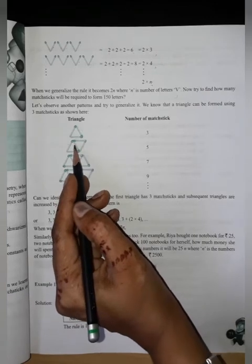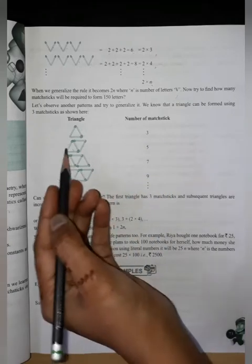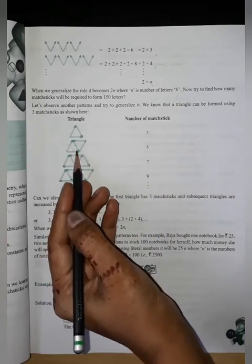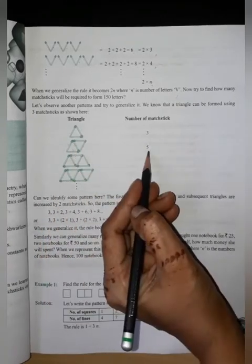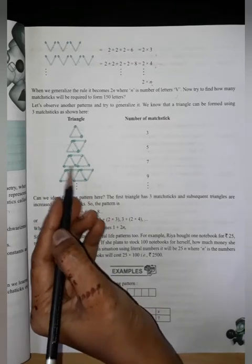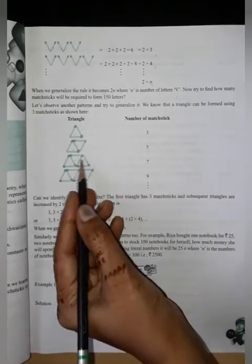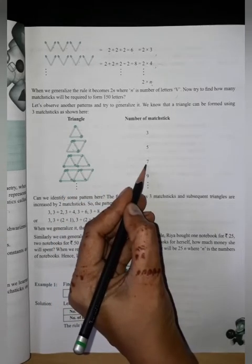So one, two, three, four, five, six, seven, eight. Next we have two triangles, commonly we have total seven matchsticks used.